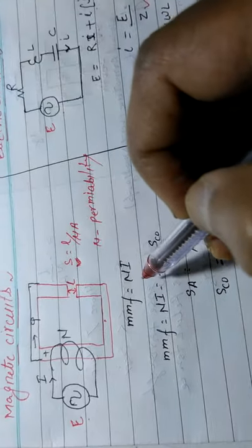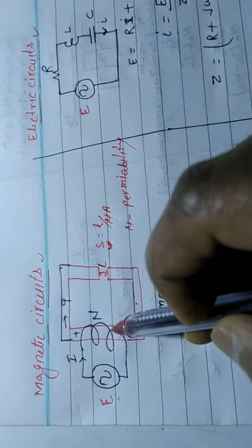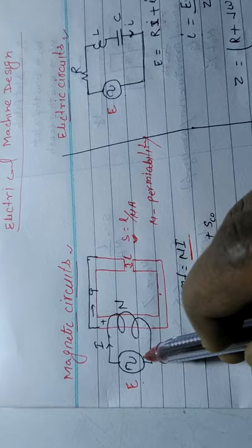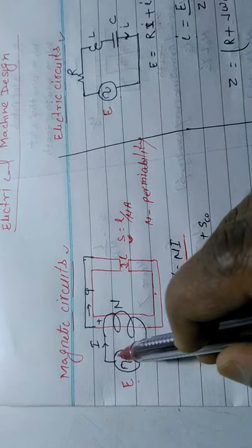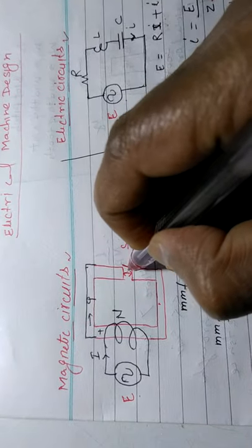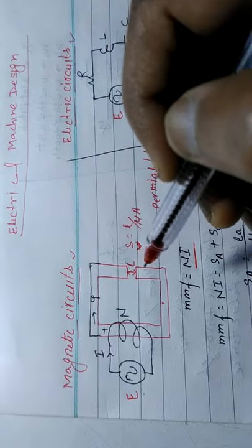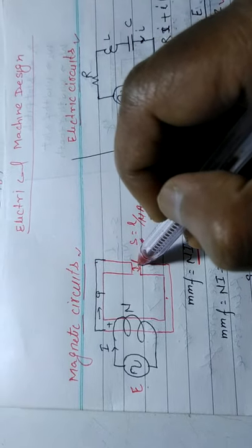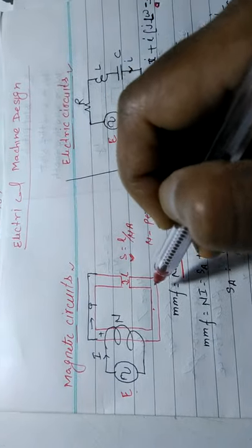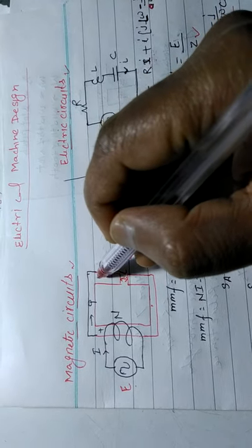If you want to calculate MMF, then MMF equals N times I, where N is the number of turns in the coil and I is the current in the excitation circuit. This circuit has an air gap and a core, and the total reluctance is the summation of the reluctance of the air gap and the reluctance of the core.